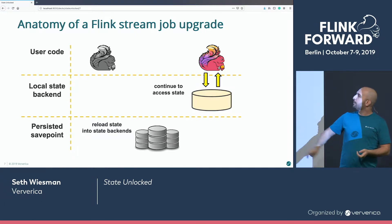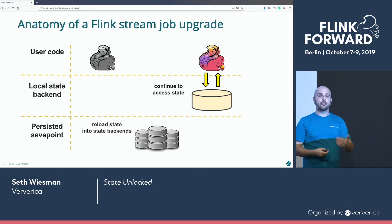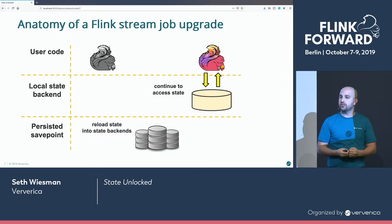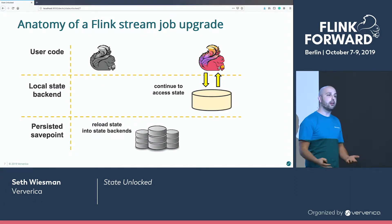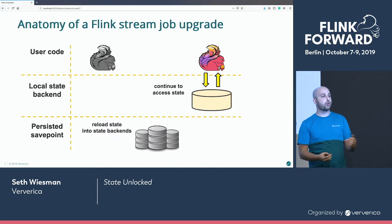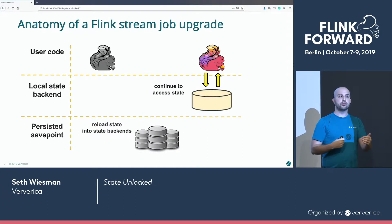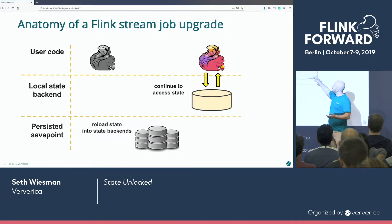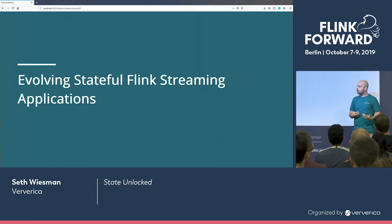But when you start to think about it in detail — the kinds of challenges you have as a real engineer making changes in your applications — maybe you added a new operator. What are the initial state values for that? Or you were storing a POJO in state but added a new field, or maybe dropped a field because you don't need it anymore. Can our state carry along? So the question is: how are we going to evolve our stateful Flink streaming applications?